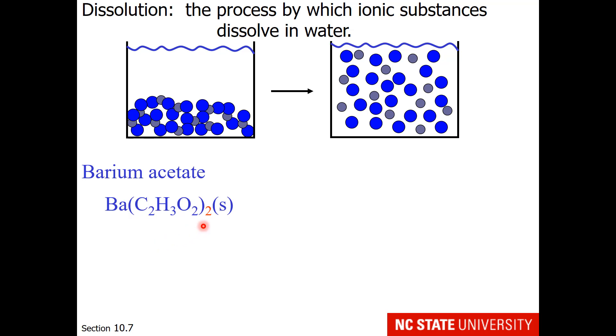Here's an example with barium acetate, which is a solid sitting at the bottom of a flask of water. Once stirring occurs, dissolution occurs. We get the barium 2 plus ion and the acetate anion.